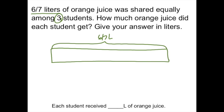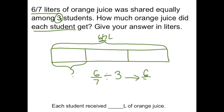It was shared equally among three students, so I'm going to break this up into three parts. I want to know how much orange juice each student gets, so I want to know what just one part is. I can find one part by looking at my total, which is six-sevenths, and dividing that by three. I'm going to rewrite this as six-sevenths times one-third. I can cross-cancel — both can be divided by three — and when I solve I get two-sevenths. So each student received two-sevenths liters.